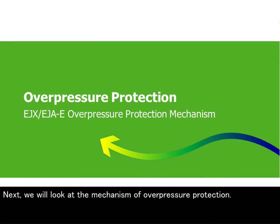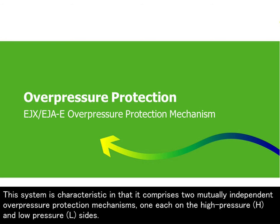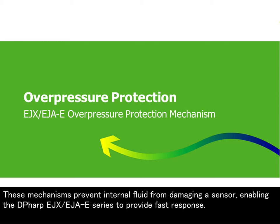Next, we will look at the mechanism of overpressure protection. This system is characteristic in that it comprises two mutually independent overpressure protection mechanisms, one each on the high pressure (H) and low pressure (L) sides. These mechanisms prevent internal fluid from damaging a sensor, enabling the DP-HARP EJX or EJAE series to provide fast response.